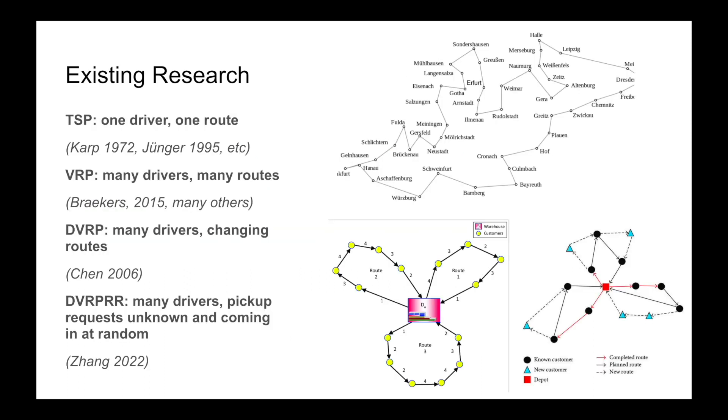There is existing research on this problem. It is a vehicle routing problem, which can be seen as a traveling salesman problem. It is a dynamic vehicle routing problem, which involves many drivers in different changing routes rather than the same route. And it is one in which requests are coming in at random.